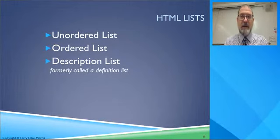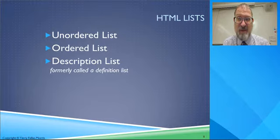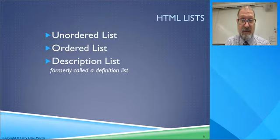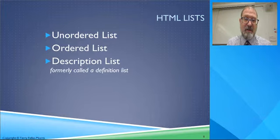Now we get into lists. Lists get a little bit confusing, but they're really cool and once you get the hang of them, they're really helpful and not too hard to use. In HTML5, you have basically three types of lists: unordered list, ordered list, and description lists — which are also called definition lists. Let's talk about each individually.